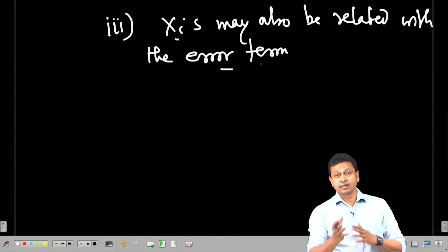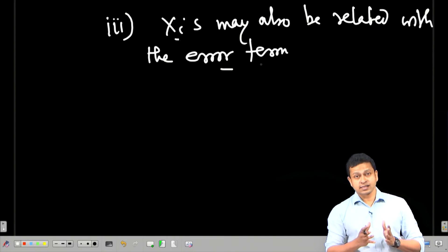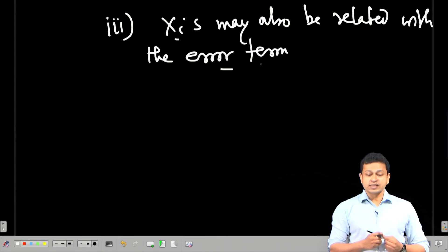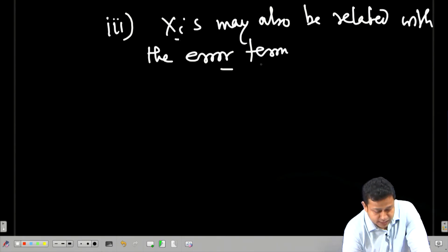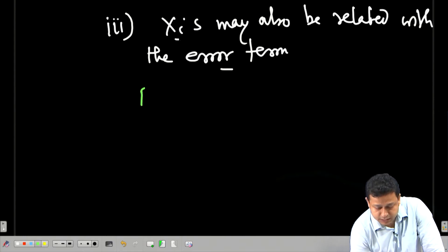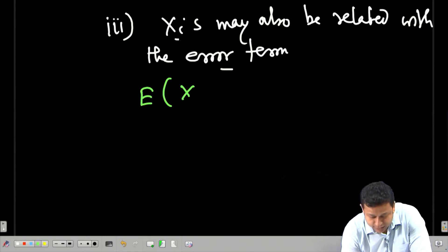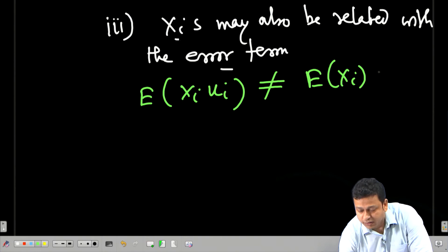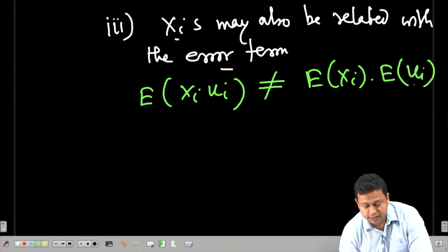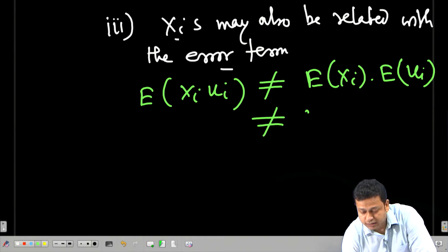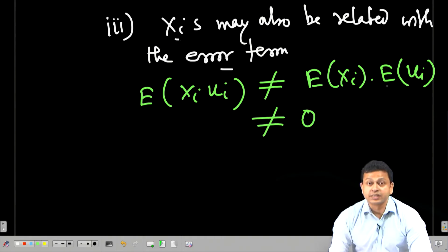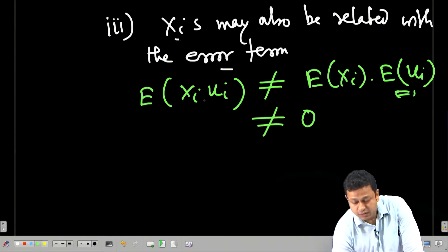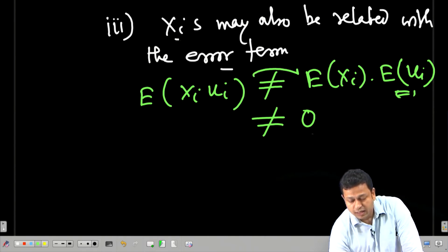The moment I allow the xis and the error term to vary together, the condition of best linear unbiased estimator might actually get violated. Essentially what I am saying is that I cannot say expectation of xi*ui equals expectation of xi times expectation of ui, or in other words I cannot say this is equal to 0. Because if it has to be 0, the expectation of ui has to be 0, and if even that holds, if independence does not hold, I can never get this value.